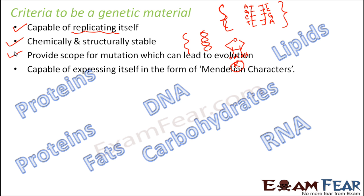The genetic material should also be capable of expressing itself in the form of Mendelian characters. From DNA, RNA is synthesized. DNA is capable of creating RNA, and RNA is capable of synthesizing proteins, and proteins will then control the traits. That is how the entire process is handled. We will look at the detail of each step involved in this entire process.